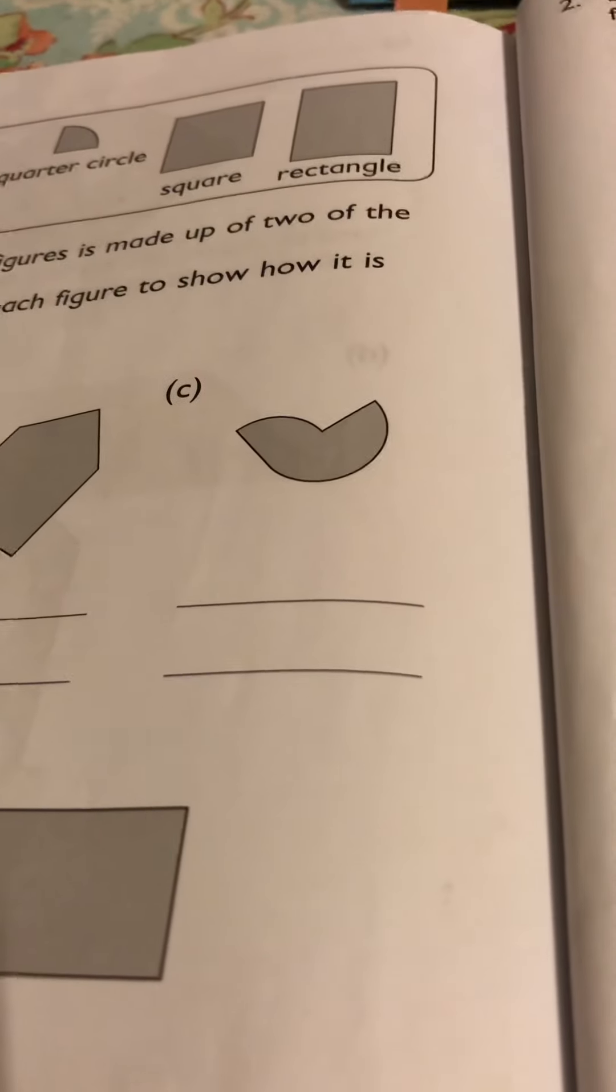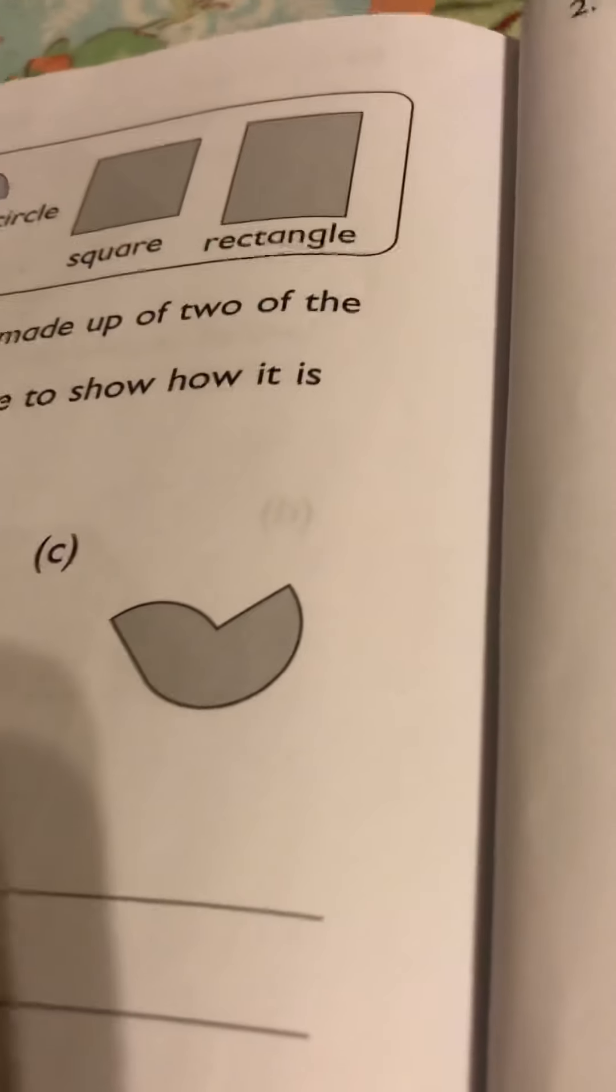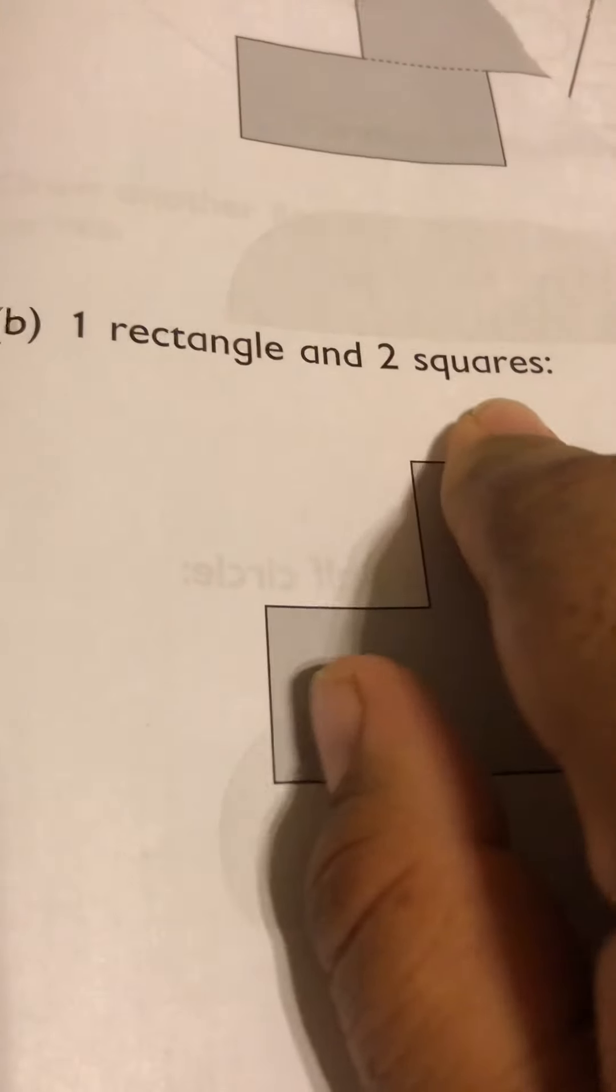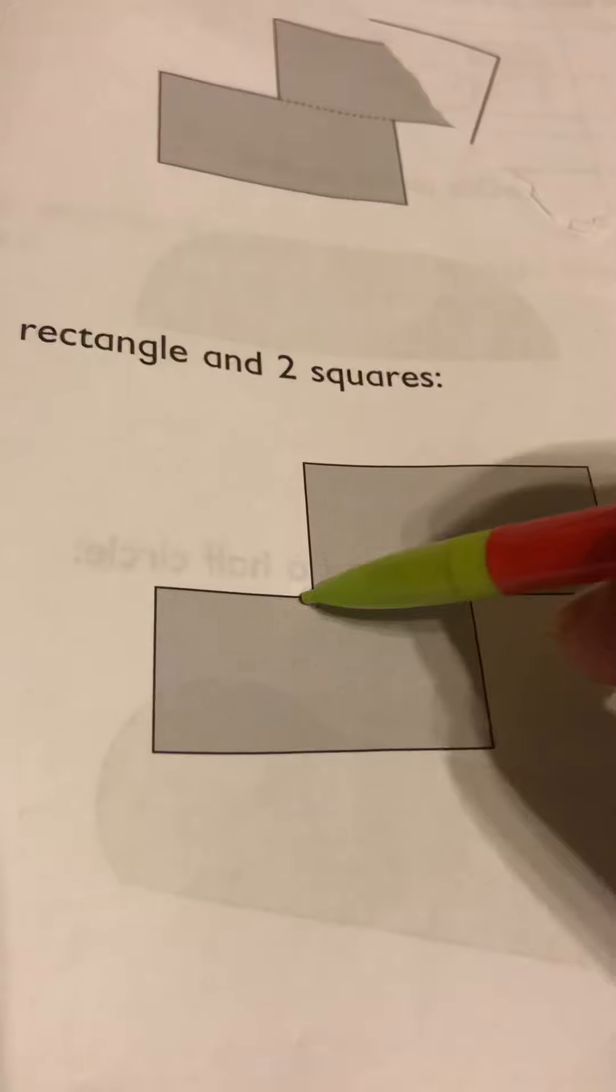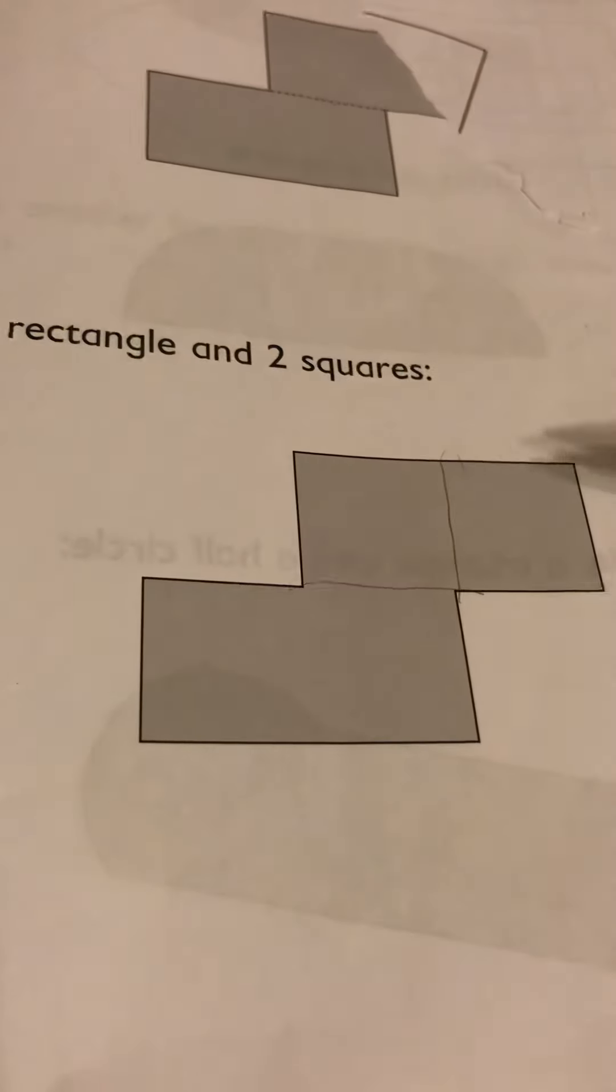Now the same thing for the next page. Here I'm just going to page 147. One rectangle and two squares. So you would have to mark this and make it one rectangle and two squares. Just very simple there. Just follow along until you get the right answer.